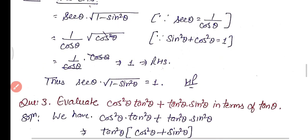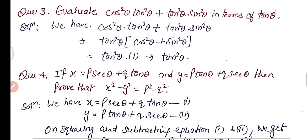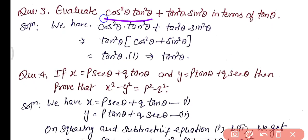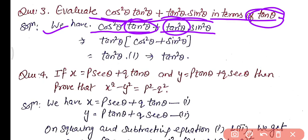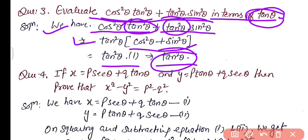Question 3: Evaluate cos² θ · tan² θ plus tan² θ · sin² θ in terms of θ. Since tan² θ is common in both terms, we take it out: tan² θ into (cos² θ plus sin² θ). Since sin² θ plus cos² θ equals 1, this becomes tan² θ into 1, which equals tan² θ. So the answer is tan² θ.